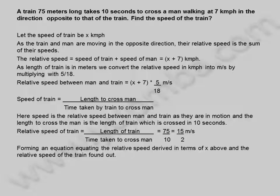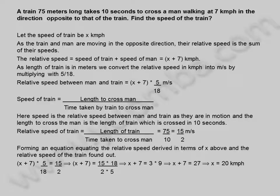Forming an equation equating the relative speed derived in terms of x above and the relative speed of the train found out: x plus 7 into 5 divided by 18 is equal to 15 divided by 2. This implies x plus 7 is equal to 15 into 18 divided by 2 into 5, which gives x plus 7 equal to 3 into 9, equal to 27. Therefore x is equal to 20 kilometers per hour. The speed of the train is 20 kilometers per hour.